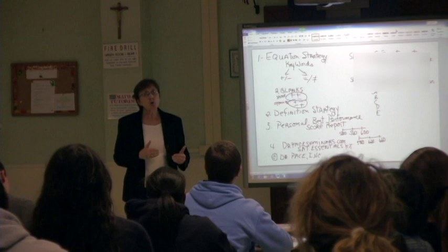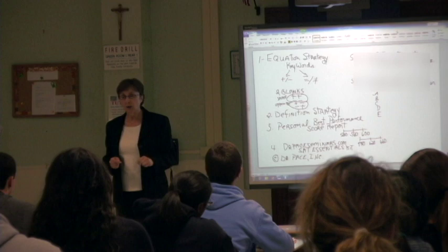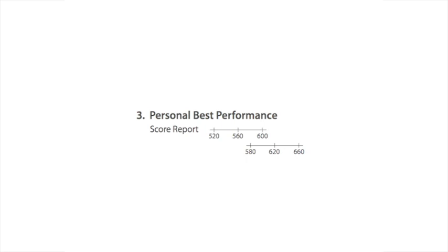Speaking of personal best, when you get your score report back, you'll get not just the score but a range of scores. On the SAT, each of the three subject areas has about an 80 point range. For example, if you got a 560 in math, they would show a 520 to 600 range.